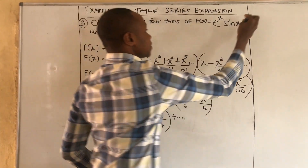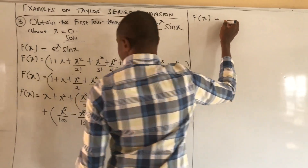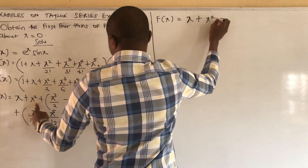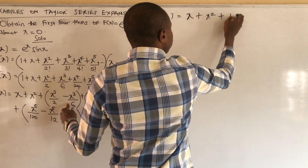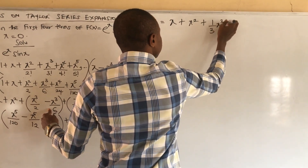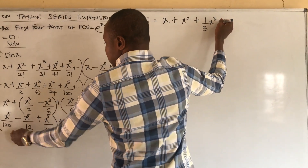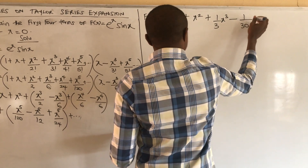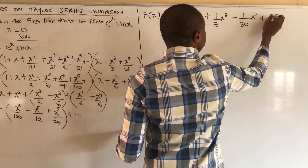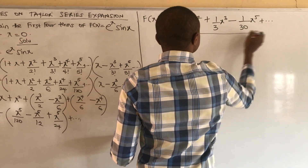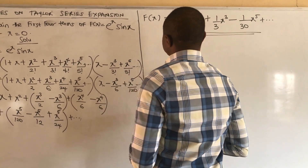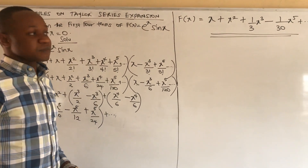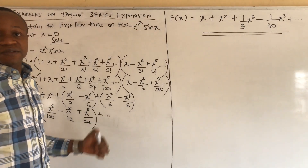Simplifying, we get f(x) = x + x² + (1/3)x³ + 0·x⁴ + (1/30)x⁵ + other terms. This is the series expansion of the function with the first four terms, as was instructed.